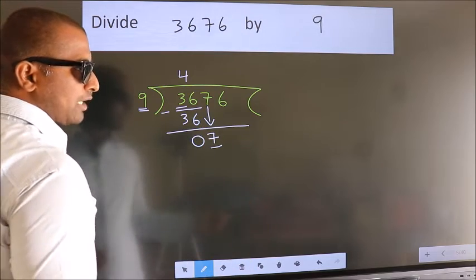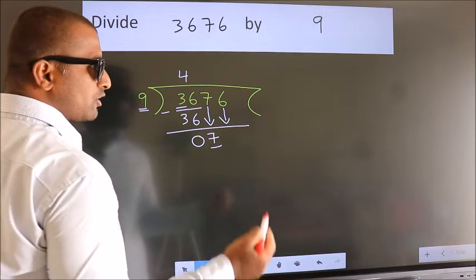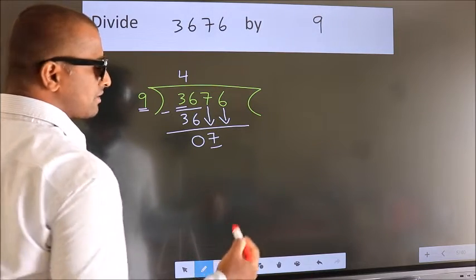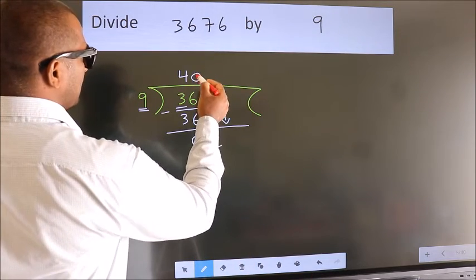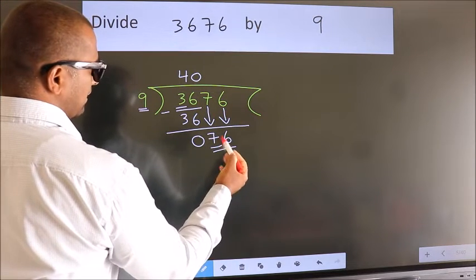So, we should bring down the second number. And the rule to bring down the second number is, put 0 here. Then only we can bring down this number. So, 76.